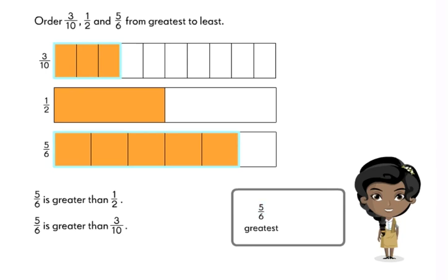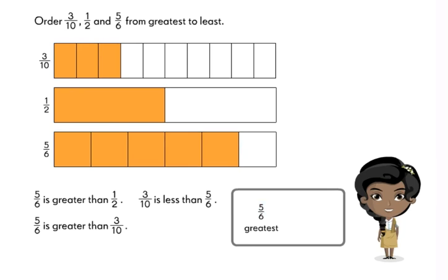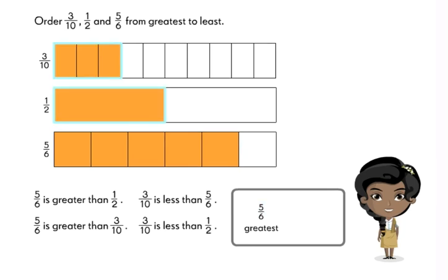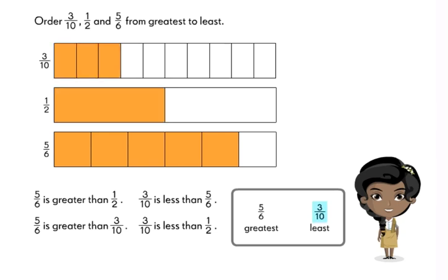3 tenths is less than 5 sixths. 3 tenths is less than 1 half. So 3 tenths is the least.